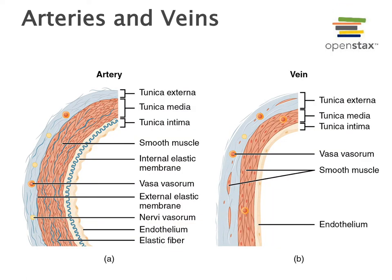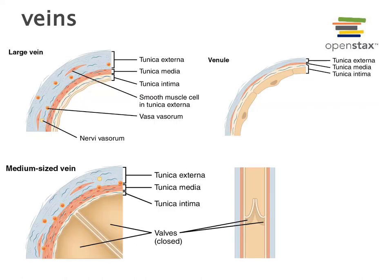Because arteries regulate the distribution of high-pressure blood to different regions of the body, they have a thick tunica media smooth muscle layer that regulates the diameter of the artery. The tunica media is the thickest of the three layers in the wall of an artery. In contrast, in a vein the tunica externa is the largest of the three layers. The tunica externa is the outermost layer of fibrous connective tissue anchoring the blood vessel to its surroundings, and it makes up the majority of the wall of a vein.